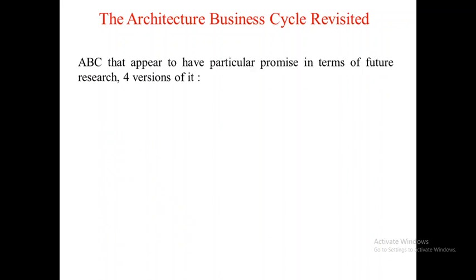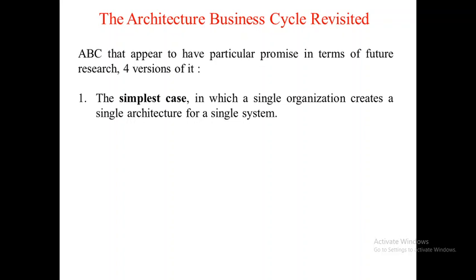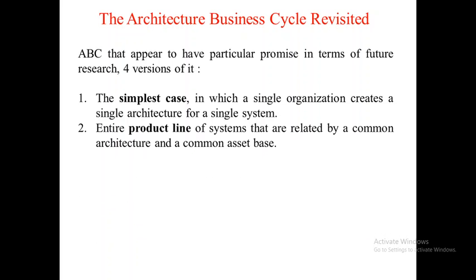The future of architecture will have EGL properties. At present we are following the Architecture Business Cycle, ABC, which we already discussed in the first unit. ABC has four versions. The first is the simplest case, in which one single organization creates one single architecture for a single system — a one-to-one-to-one ratio, where one architecture serves only one system and only one product.